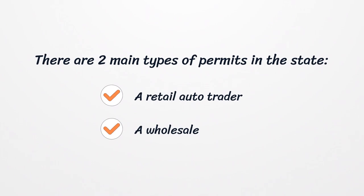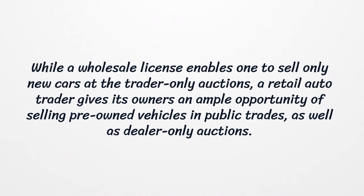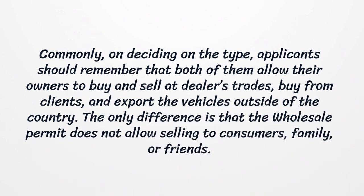There are two main types of permits in the state: a retail auto trader and a wholesale. While a wholesale license enables one to sell only new cars at dealer-only auctions, a retail auto trader gives its owners an ample opportunity of selling pre-owned vehicles in public trades, as well as dealer-only auctions. Both permit types allow their owners to buy and sell at dealers' trades, buy from clients, and export vehicles outside of the country. The only difference is that the wholesale permit does not allow selling to consumers, family, or friends.